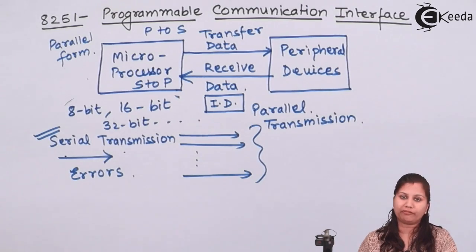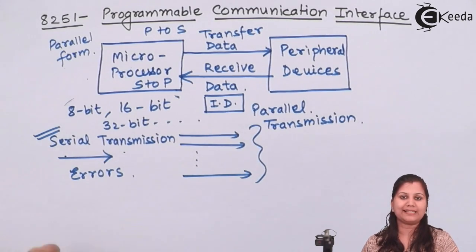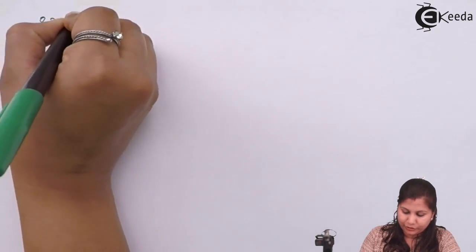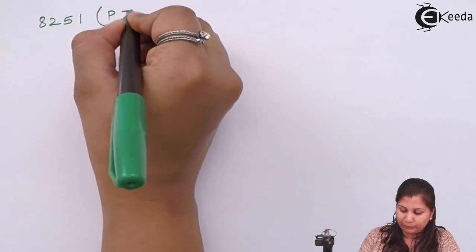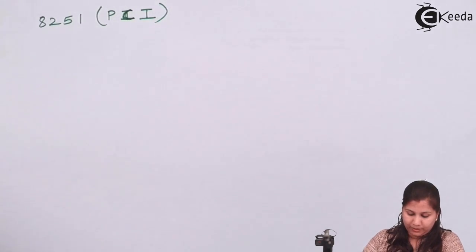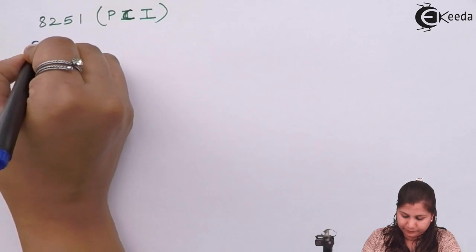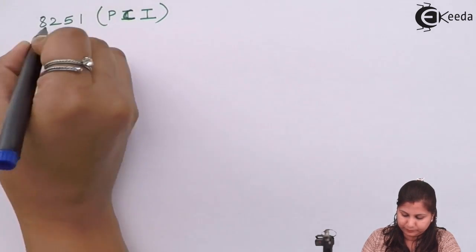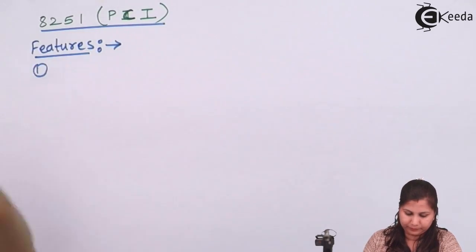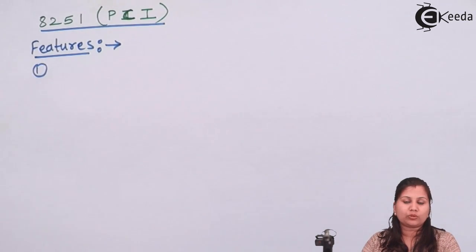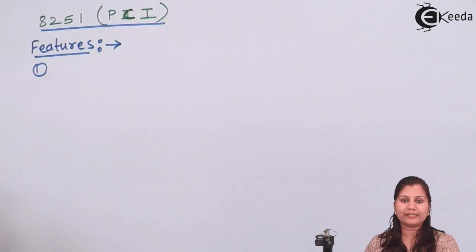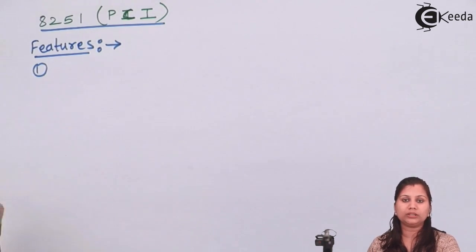The IC number for this device is 8251. Let us study the 8251 Programmable Communication Interface device in detail. The 8251, known as the Programmable Communication Interface, was developed by Intel as a communication interface for the microprocessor. It can be used for all families of microprocessors like 8080, 8085, and 8088, so it is compatible with all microprocessor families.